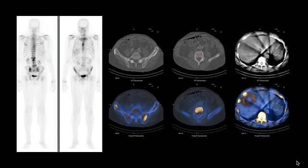The next case is of a patient with history of prostate cancer who presented with rising PSA and a whole body bone scan was performed. We are looking at whole body images in posterior and anterior projections. There are foci of increased uptake in the spine and the pelvis that suggest osteoblastic bone metastases. To further characterize these lesions, we did a SPECT CT.